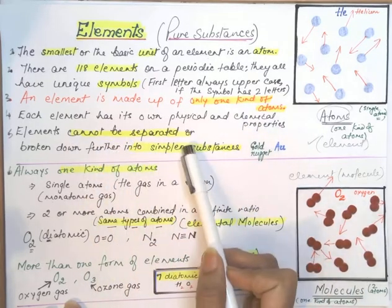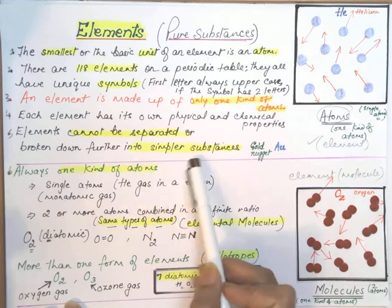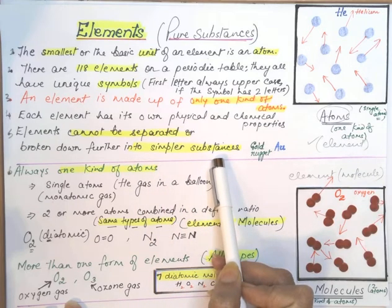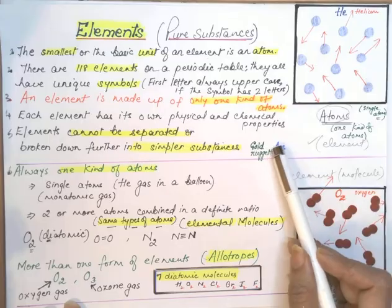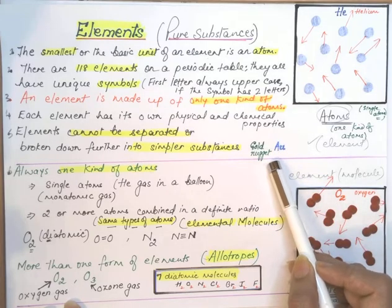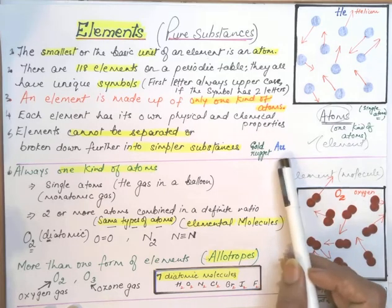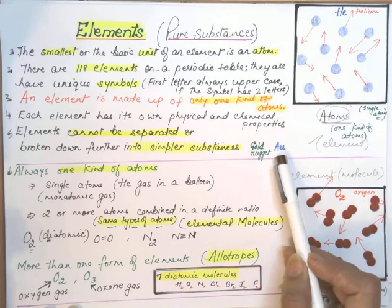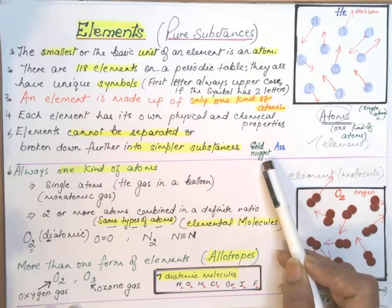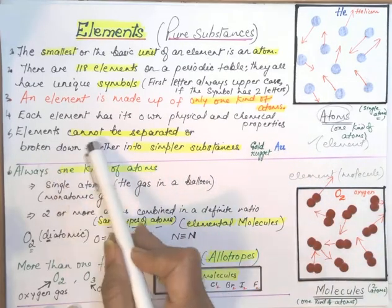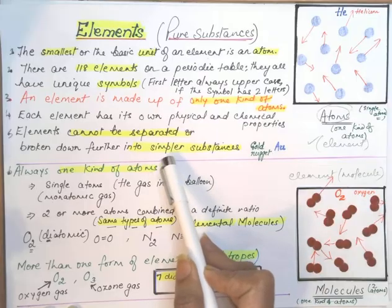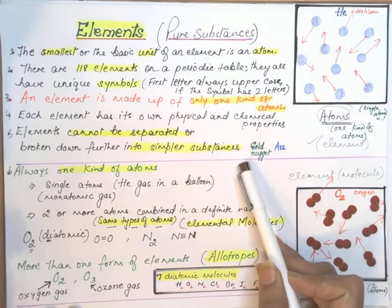An element cannot be separated or broken down further into simpler substances. For example, if you have a pure gold nugget and keep cutting it down, the smallest unit will still be a gold atom. No matter how much you divide it, you will still end up with a gold atom. You cannot divide an element further into a new or simpler substance.